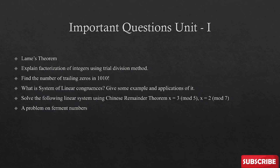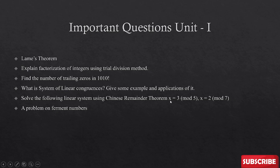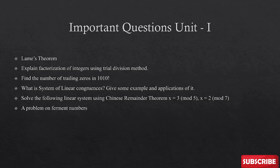Important questions for Unit 1 include Lame's theorem, factorization of integers using the trial division method, and the Chinese Remainder Theorem. For example: solve the linear system x ≡ 3 (mod 5) and x ≡ 2 (mod 7). Also expect one problem on Fermat numbers, which may not be purely numerical. We will also discuss the previous question paper at the end of the video.